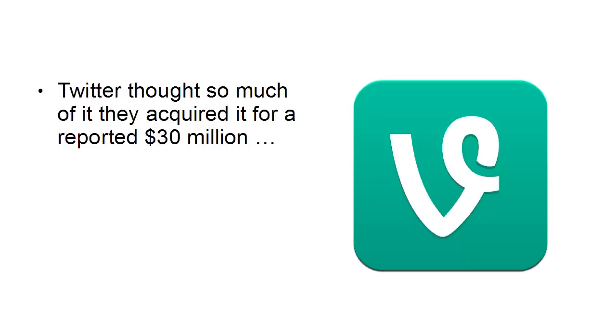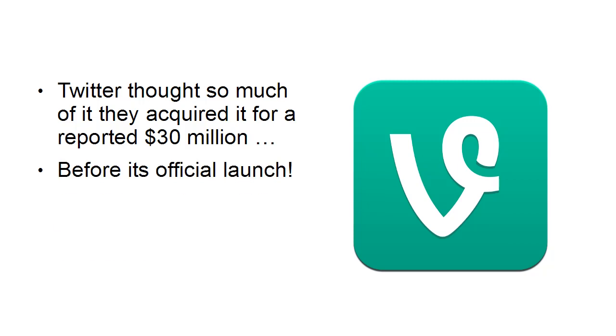Then there's Vine. Vine is a social network where people can share six-second looping videos. Twitter thought so much of it, they acquired it for a reported $30 million, and that was before its official launch. As of December 2015, the last statistics that are available, Vine had 200 million active users.